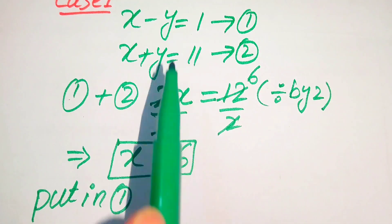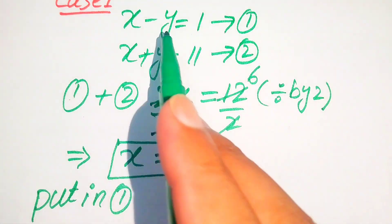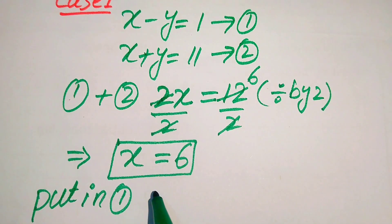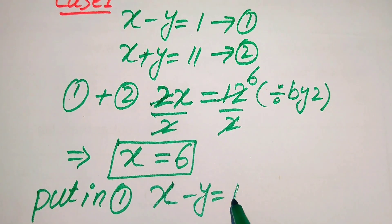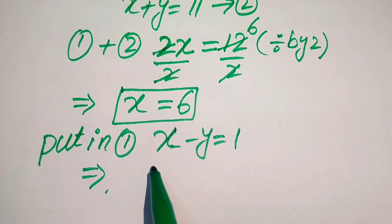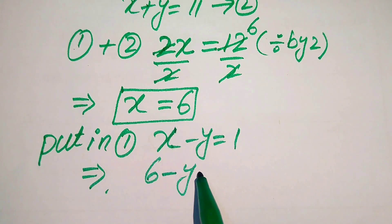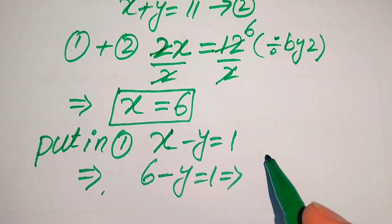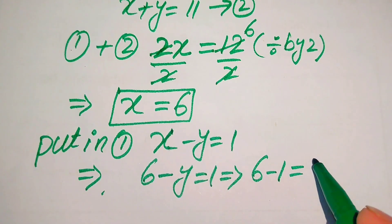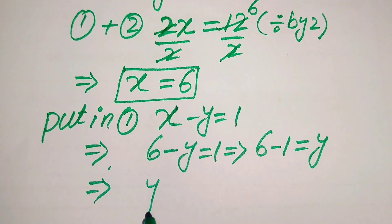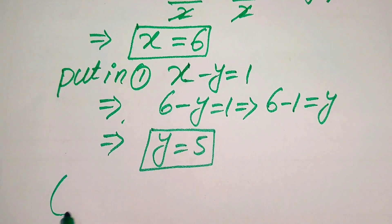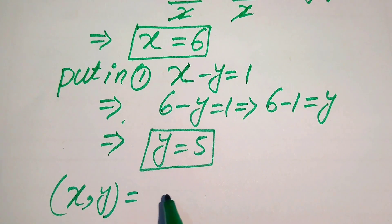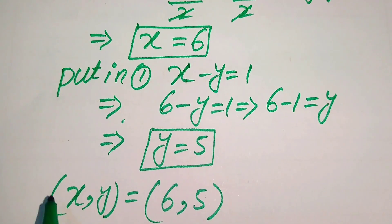We put the value of x into equation 1. Substituting x equals 6, it becomes 6 minus y equals 1, which gives us 6 minus 1 equals y. So we get y equals 5. This is our first integer solution: x equals 6 and y equals 5.